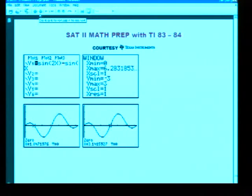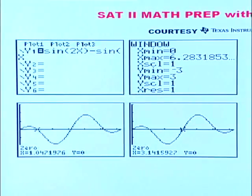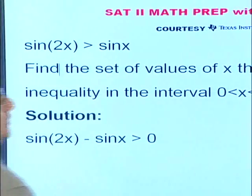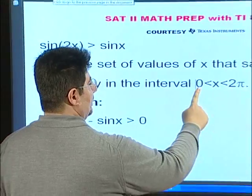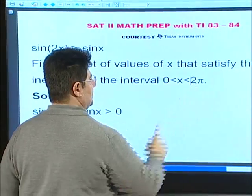We have to make sure that we are in the radian mode, and that the x min value is 0 and x max value is 2π.